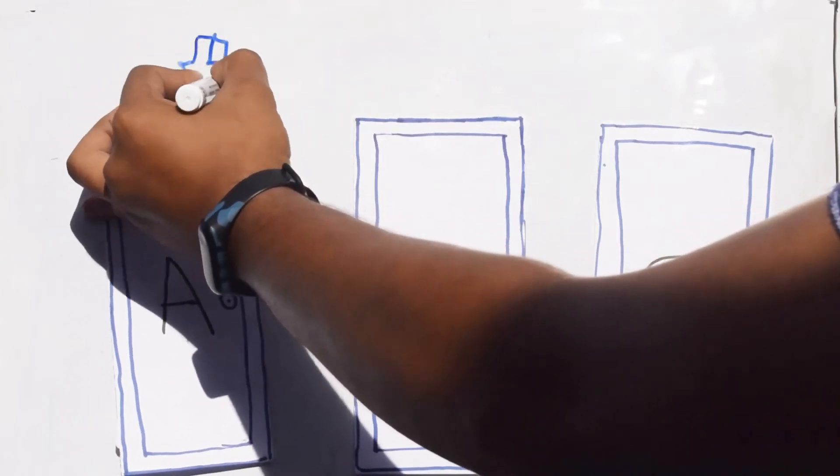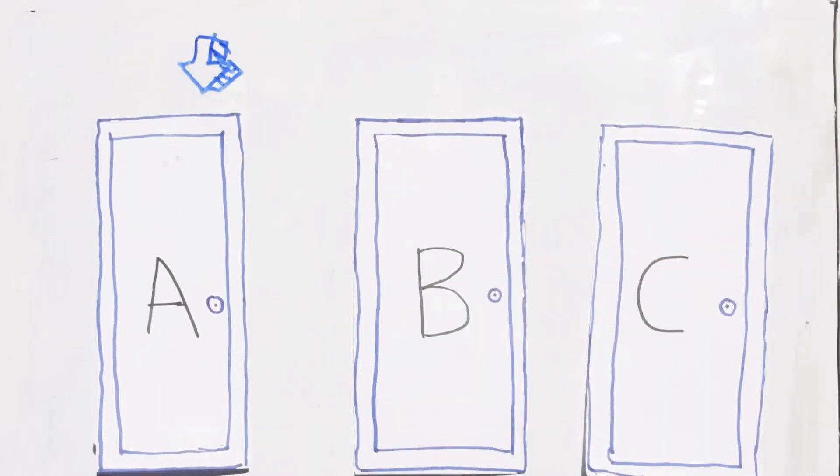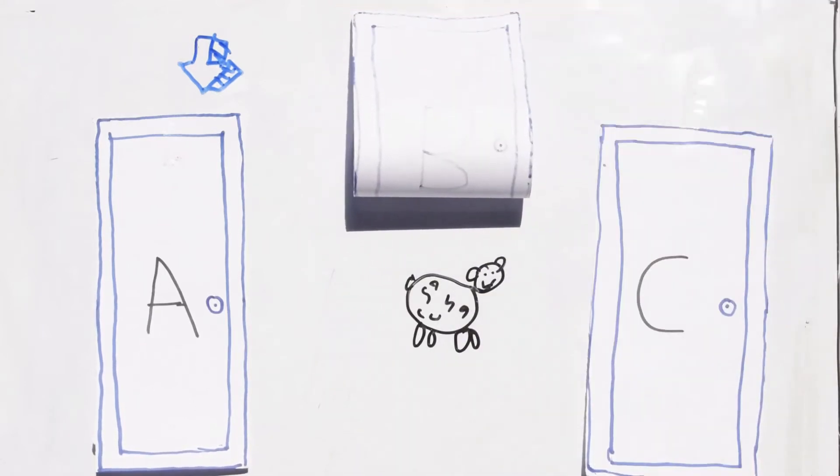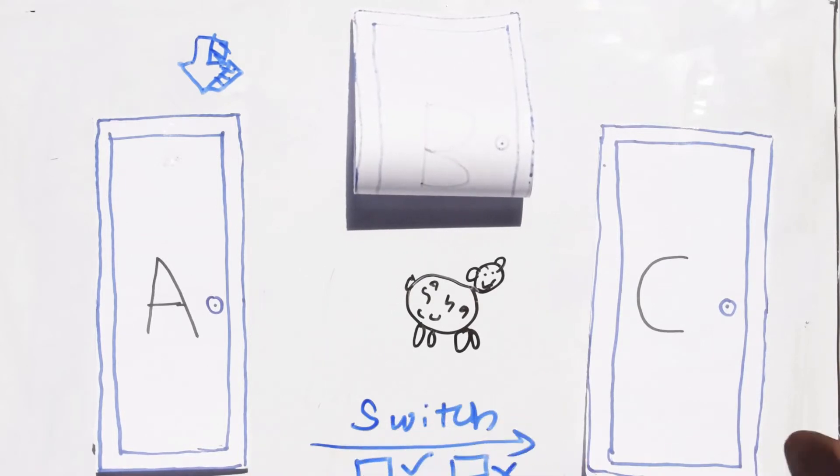Once the host confirms your choice, he goes to one of the other two remaining doors and opens it, revealing that there is a goat behind it. Now he offers you a chance of switching your initial choice with the remaining door.